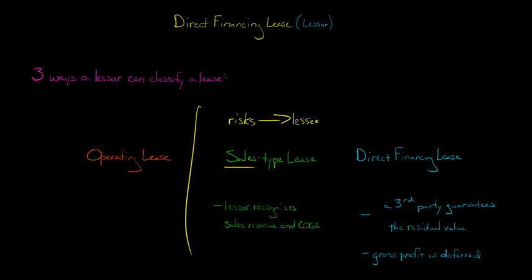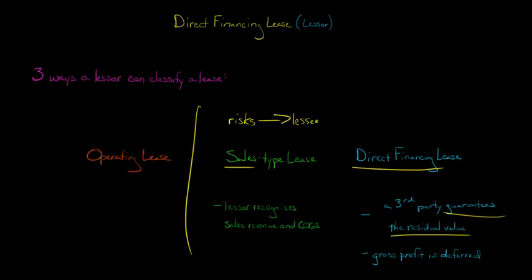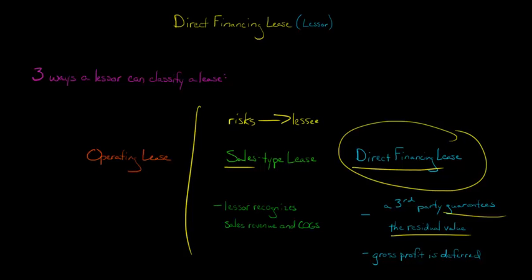The direct financing lease is where you're transferring the risks of ownership to the lessee, but not all of the risks. The reason is that with a direct financing lease, there's an unrelated third party coming in and guaranteeing the residual value. So the lessor has not completely transferred away 100% of the risks, because there's still some credit risk from that third-party guarantee. When we have that guarantee from a third party, we classify it as a direct financing lease. The major difference from a sales type lease is that the gross profit on the transaction is deferred and recognized over the life of the lease.